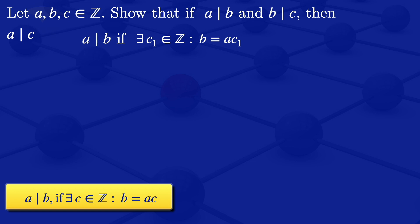Then by definition we have B divides C if there exists an integer which I will call C2 such that C is equal to BC2.